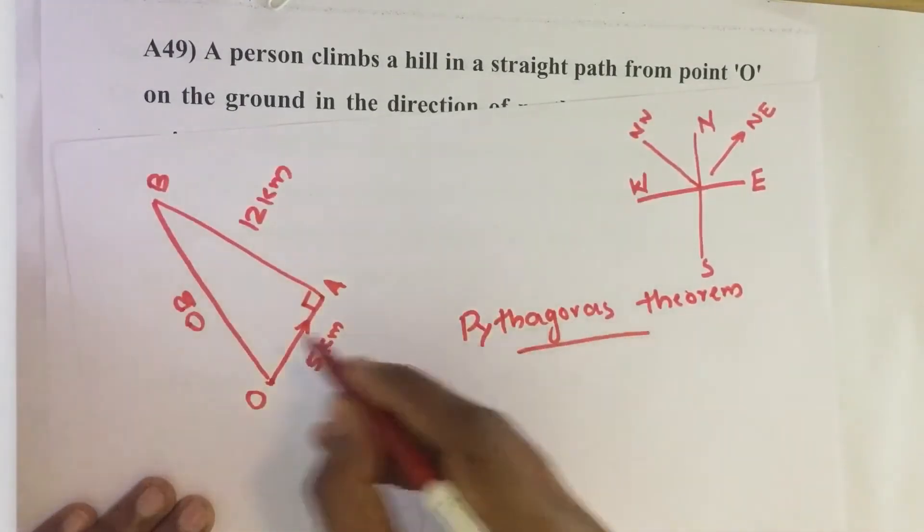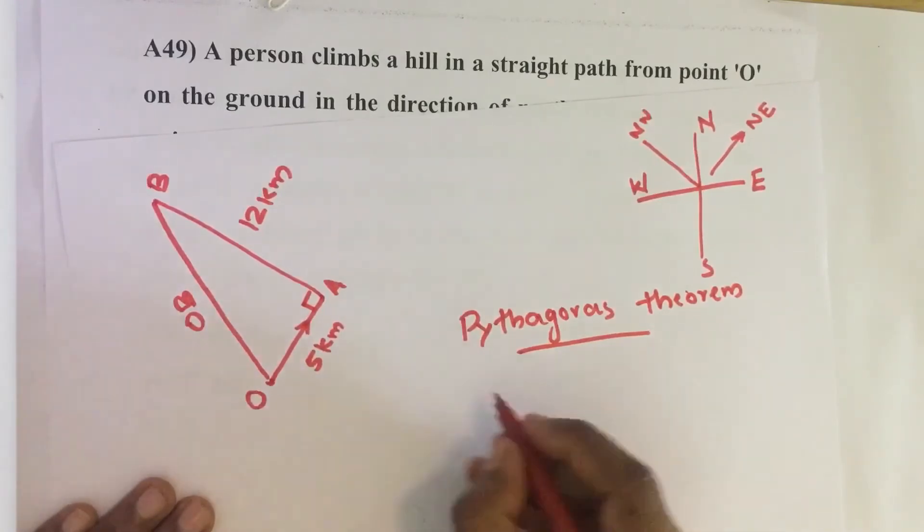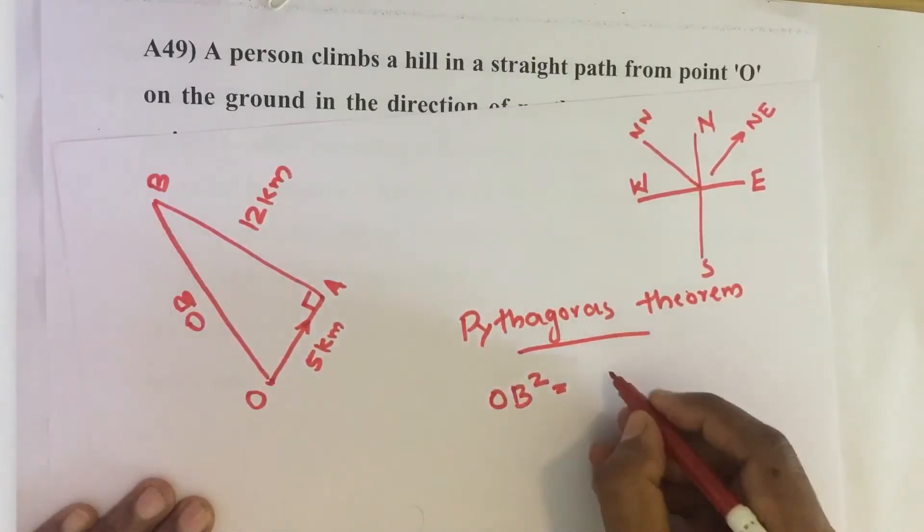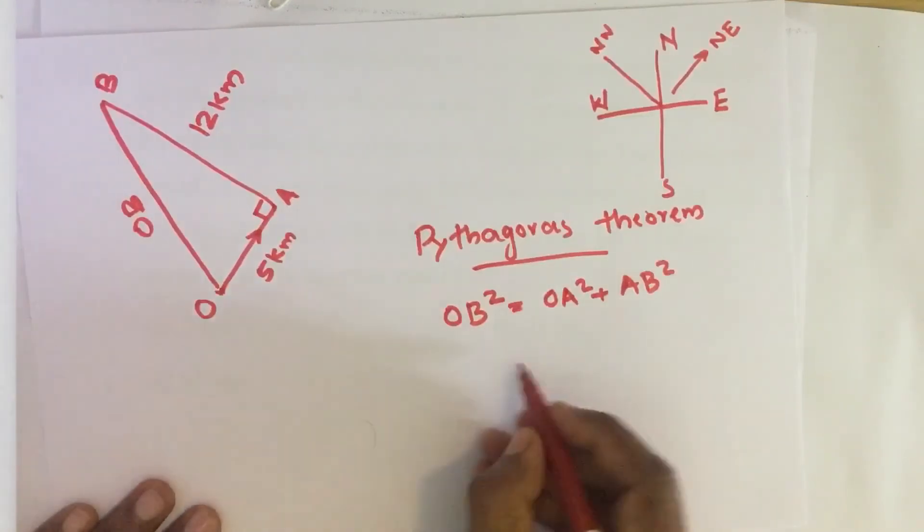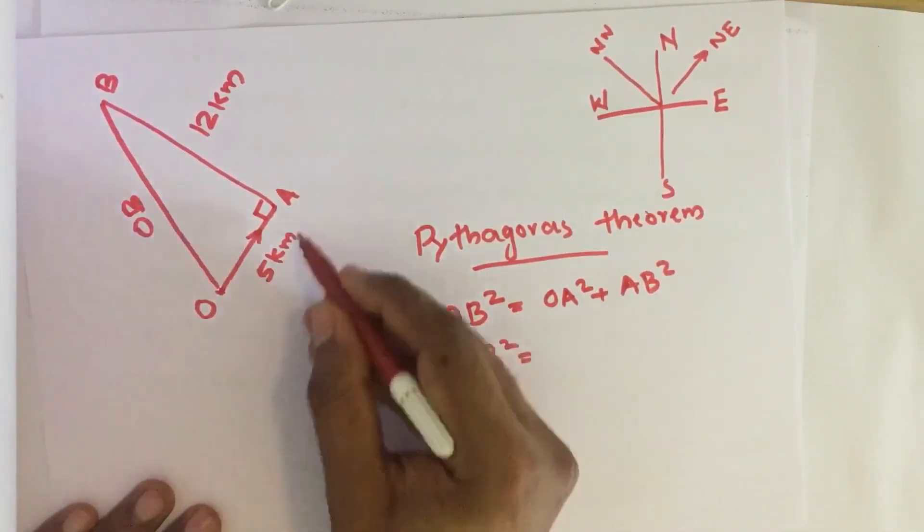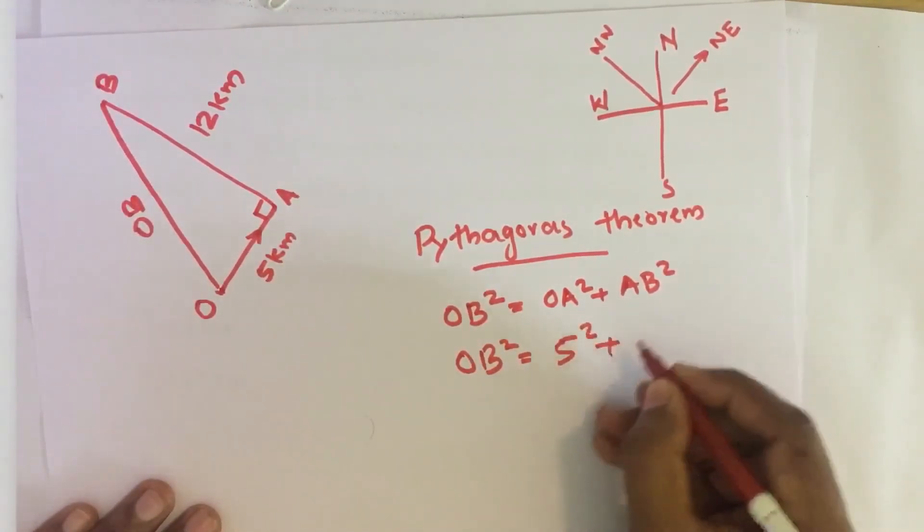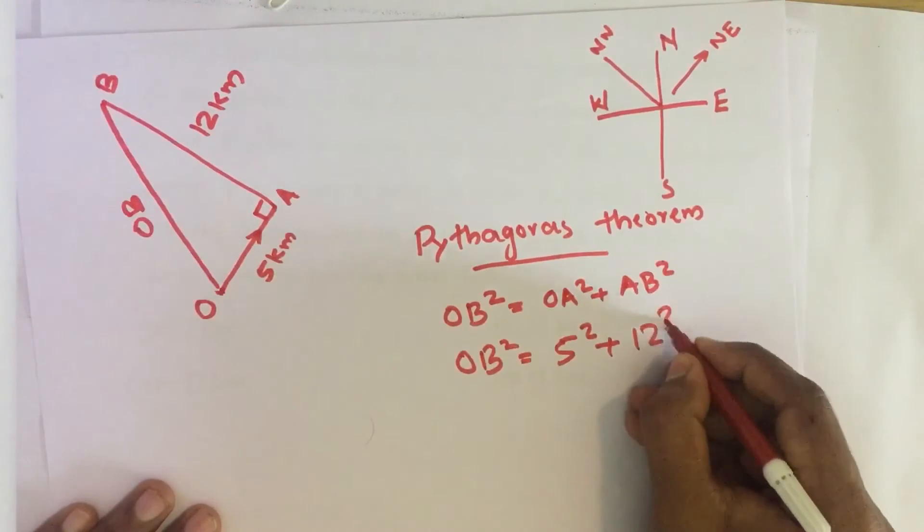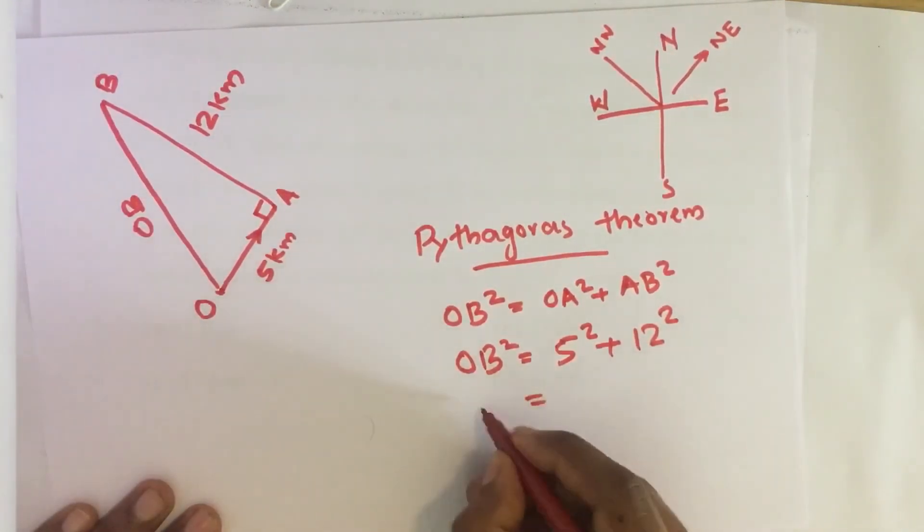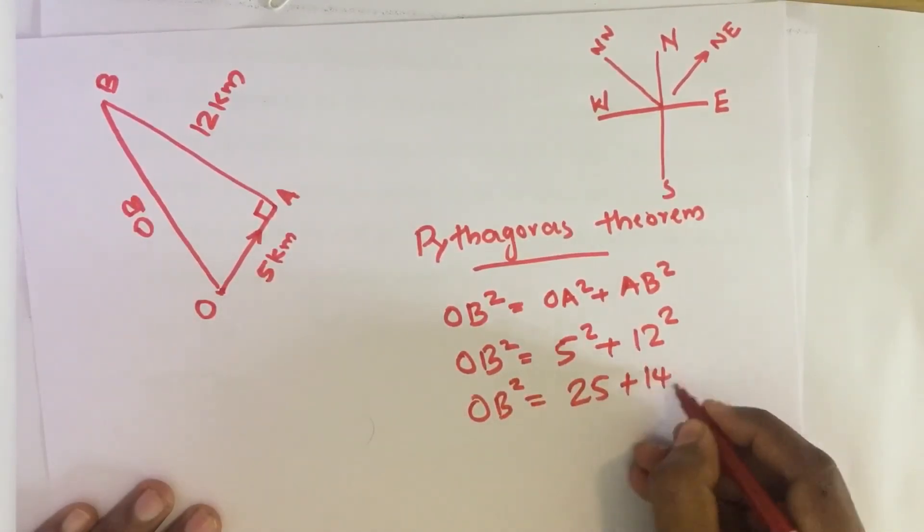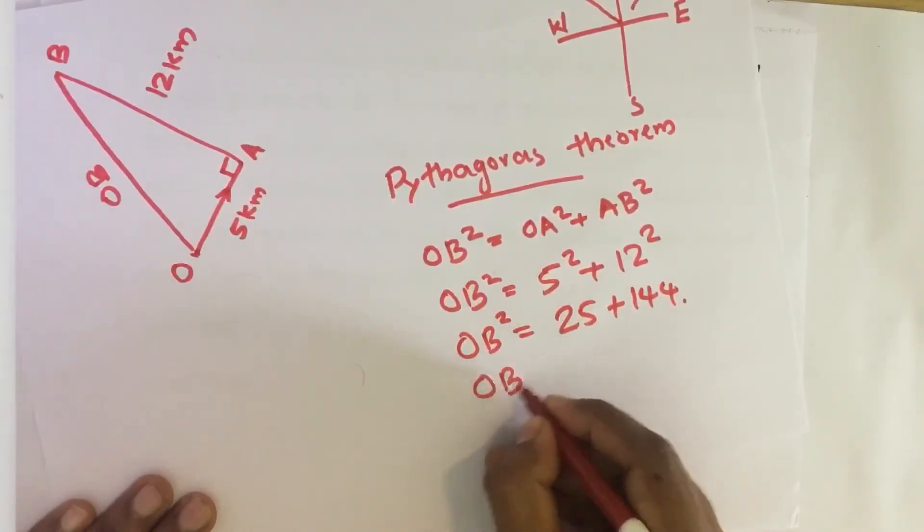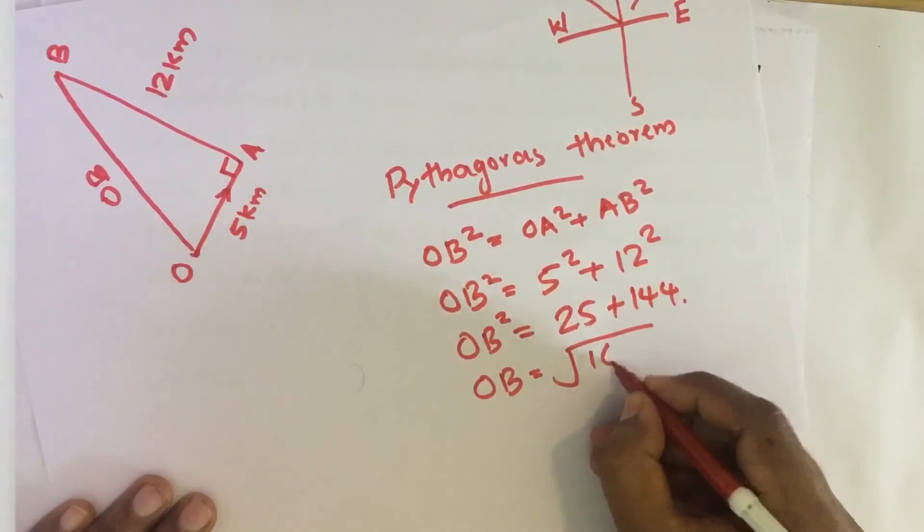What is Pythagoras theorem? The largest side, that is here it is OB. OB square equals sum of squares of other two sides. Here it is OA square plus AB square. Then OB square equals, OA is 5 km, then 5 square plus AB is 12 square. Then OB square equals 25 plus 144 is 169.